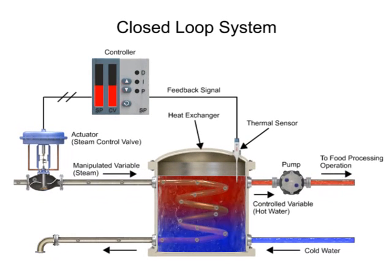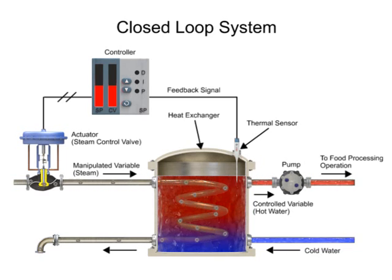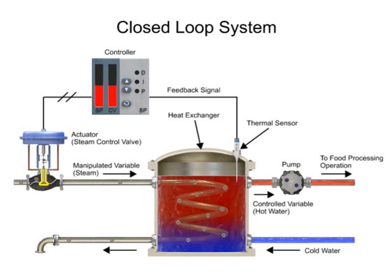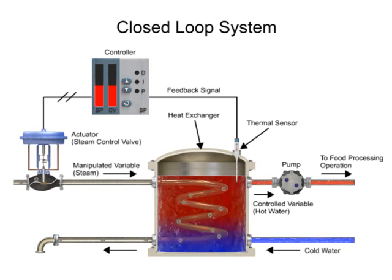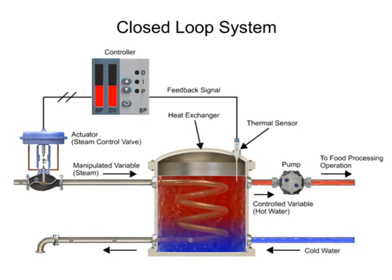The heat exchanger supplies heated water to a food processing operation. Cold water enters the bottom of the vessel where the water temperature rises as it passes through steam-heated coils before flowing out of the pump at the top.